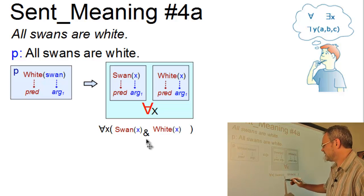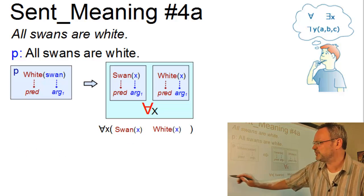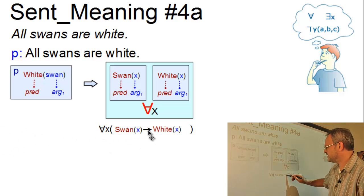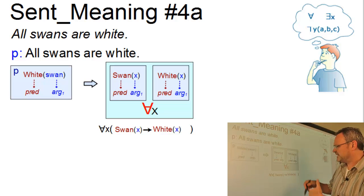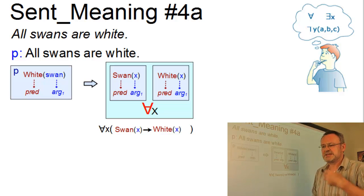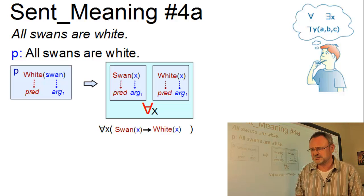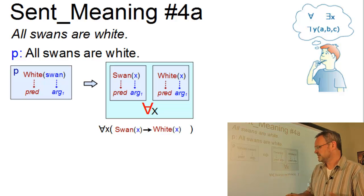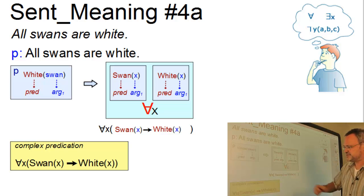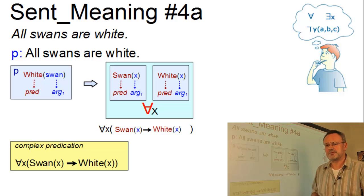So we cannot take the conjunction, but we need the implication. And now, this term can be read as follows. For all elements x it holds, if x is a swan, then x is also white. So, as a result, this is the complex predication which realizes the proposition all swans are white in terms of predicate logic.